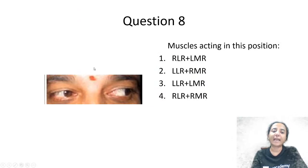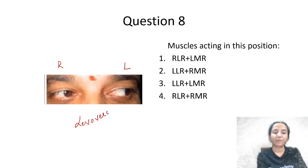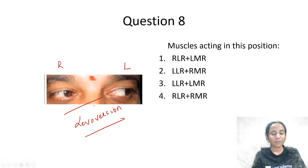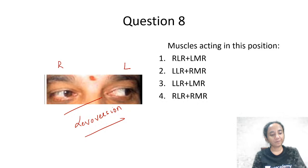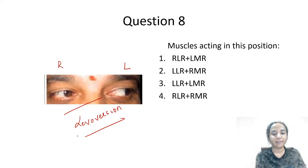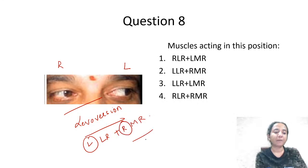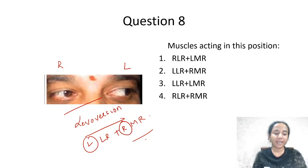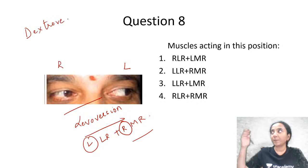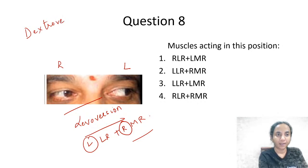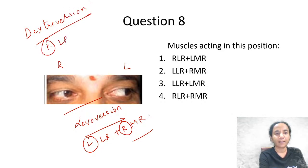This is a simple question: what muscles act in levoversion? The patient is simply looking to the left side. When looking left, the left eye abducts and the right eye adducts. Left eye abducts means left lateral rectus; right eye adducts means right medial rectus. For dextroversion, the patient looks right — right eye abducts (right lateral rectus) and left eye adducts (left medial rectus).